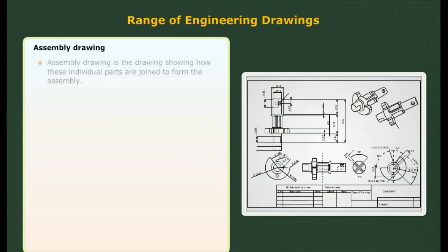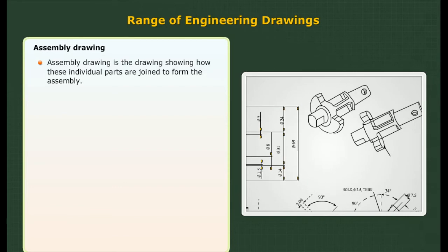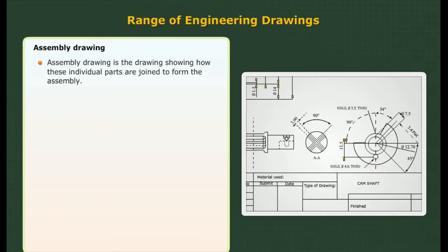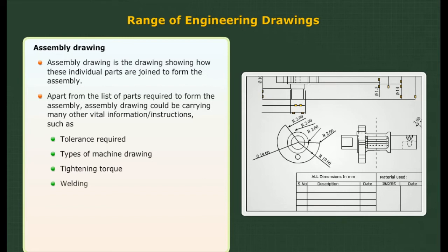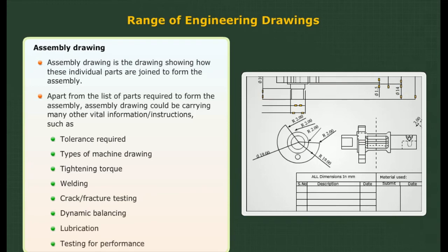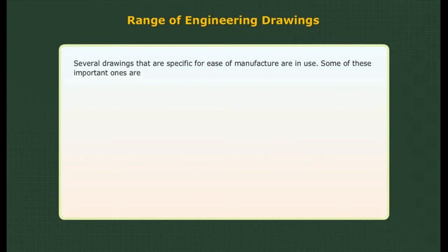Assembly drawing: an assembly drawing shows how individual parts are joined to form the assembly. Apart from the list of parts required to form the assembly, an assembly drawing could carry many other vital information or instructions such as tolerances required, types of machine drawing, tightening torque, welding, crack or fracture testing, dynamic balancing, lubrication, and testing for performance.